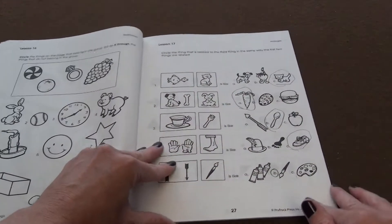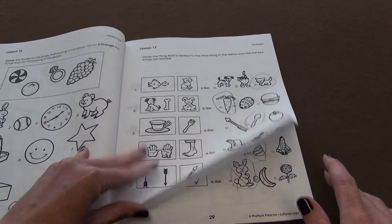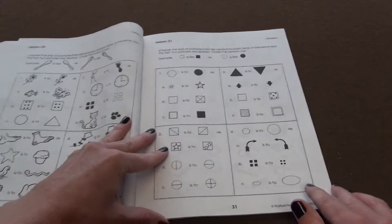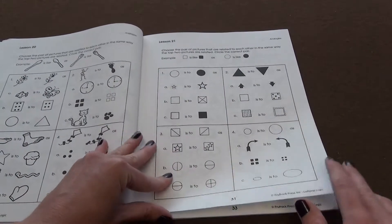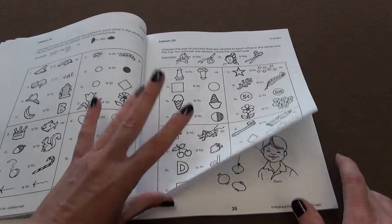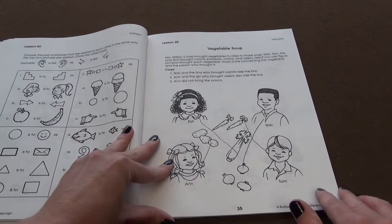And then it moves on to analogies. And so this is just a very easy sit down, do a page. And it just kind of gets that critical thinking portion of our brain working.